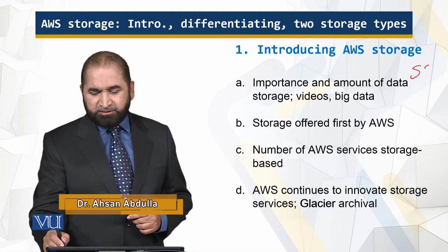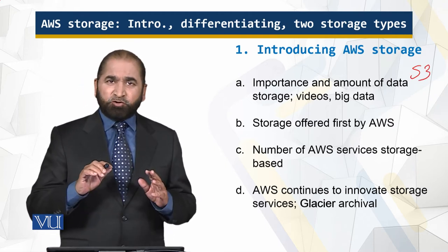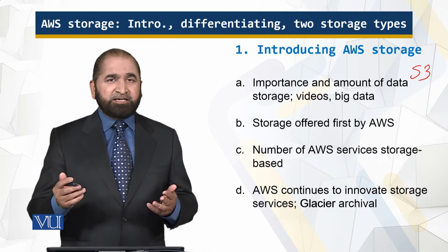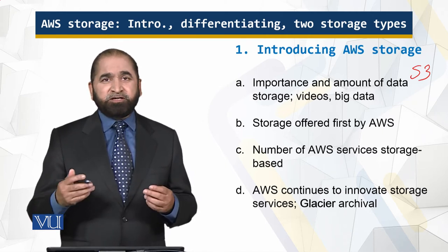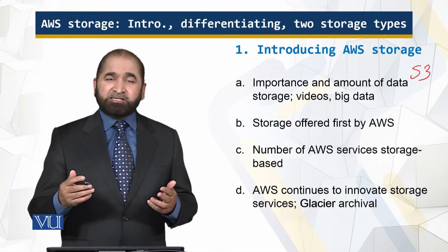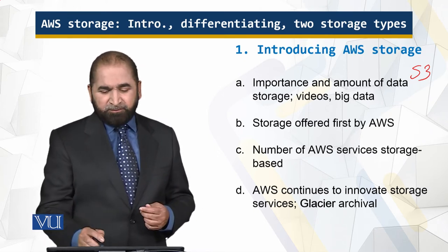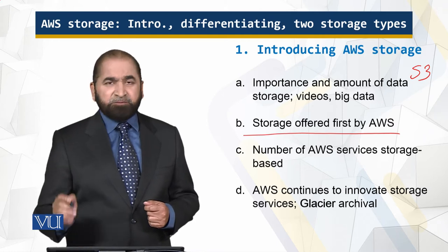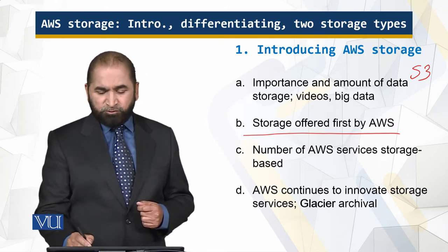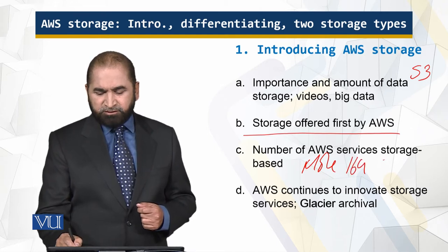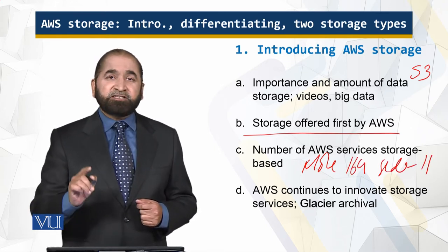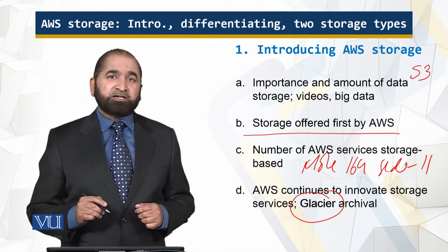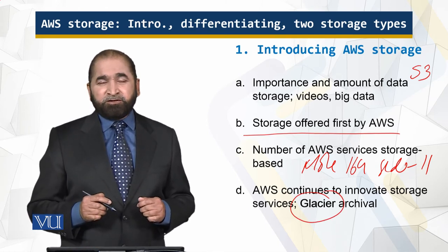When you store data on the Amazon cloud on S3, which is the Simple Storage Service, the data is stored as bytes. For AWS, it is just bytes — it could be an image, audio, or MRI scans which require certain software to read. S3 was the first service offered by AWS, and there are many other storage services. One of them is Glacier, which is for archival services.